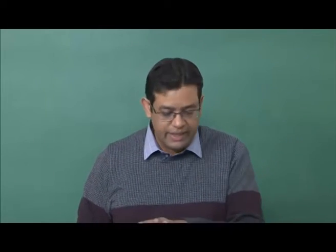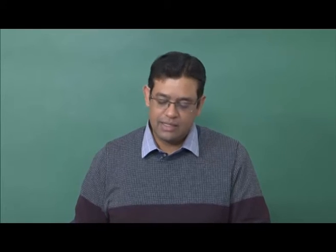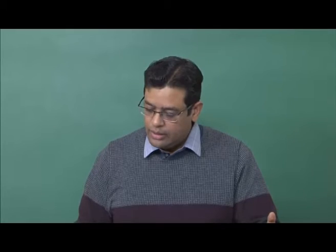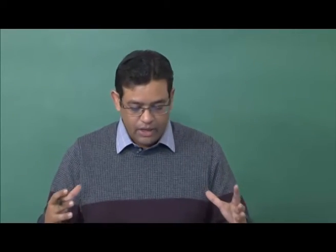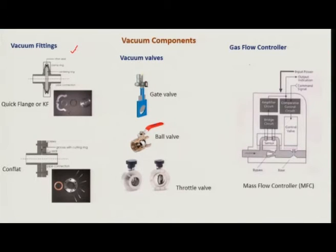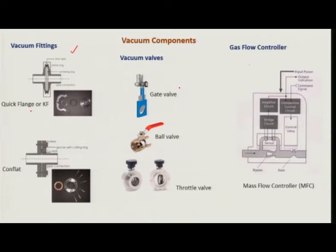Apart from pumps, there are several other components in a vacuum system. Vacuum fittings should be leak-proof; there are different types such as quick flange or conflat fittings. Vacuum valves allow you to control pressure and can be pneumatically, computer-controlled, or manually operated. When you need to flow a pure gas into the system, you can use a mass flow controller to introduce gas at a controlled rate. These are all part of a vacuum system.